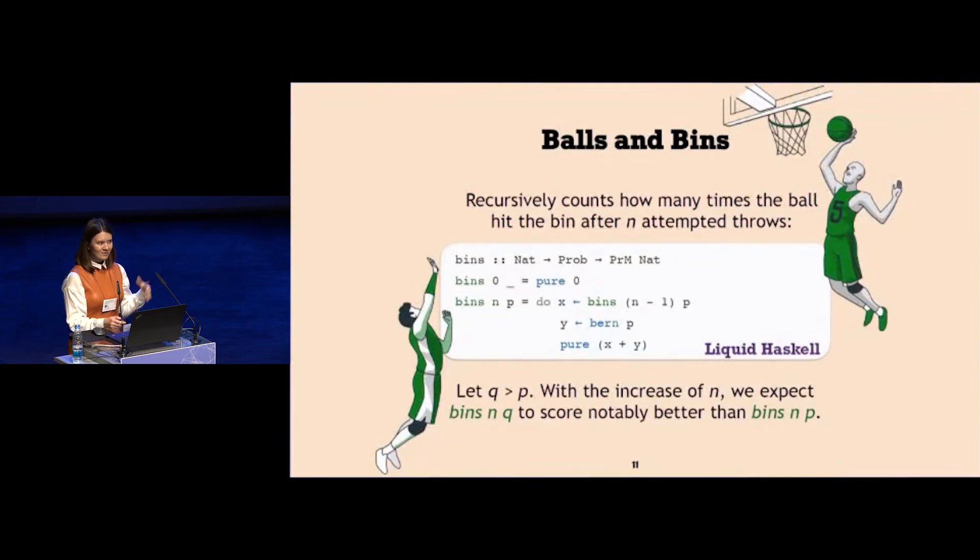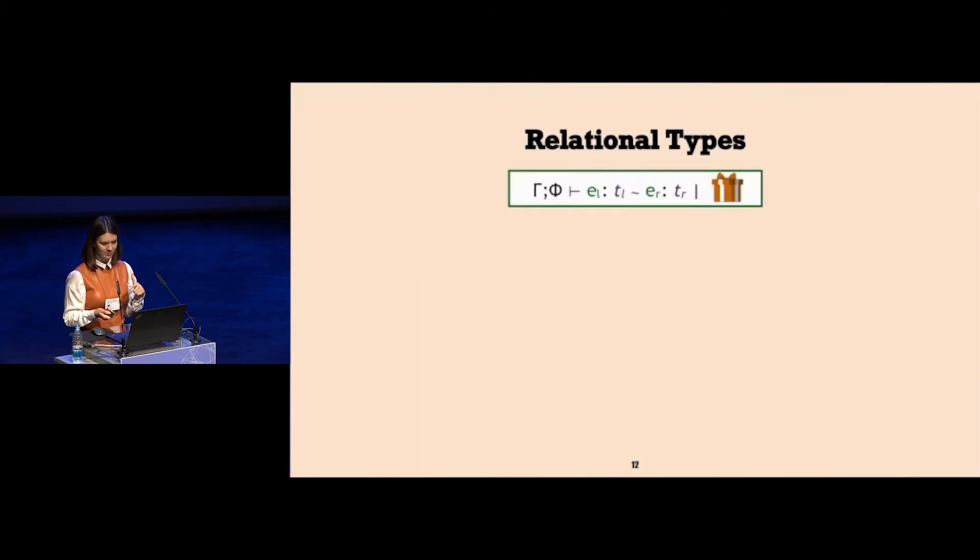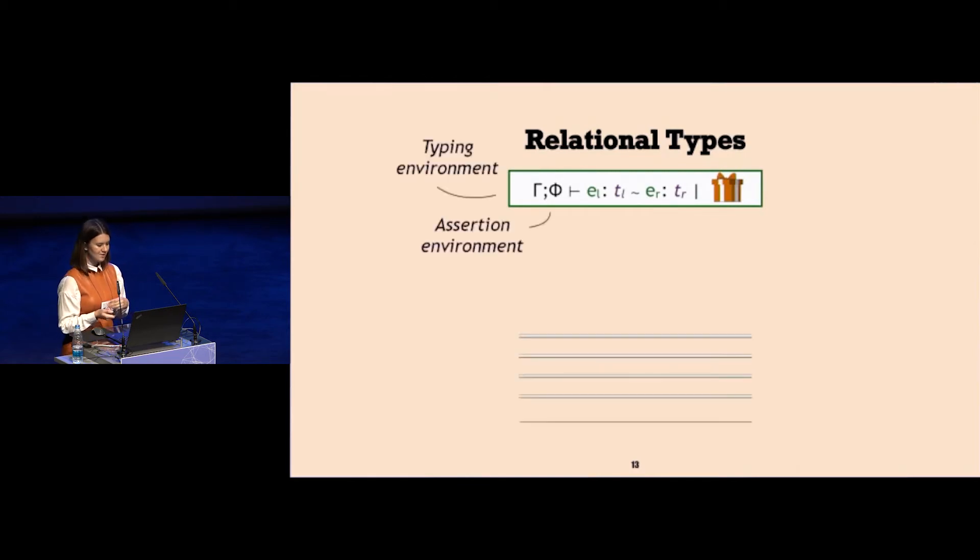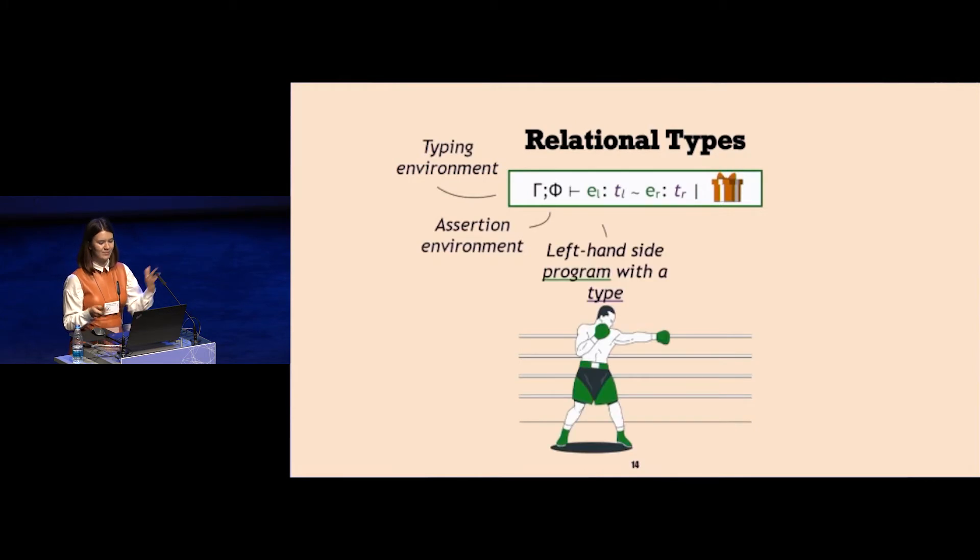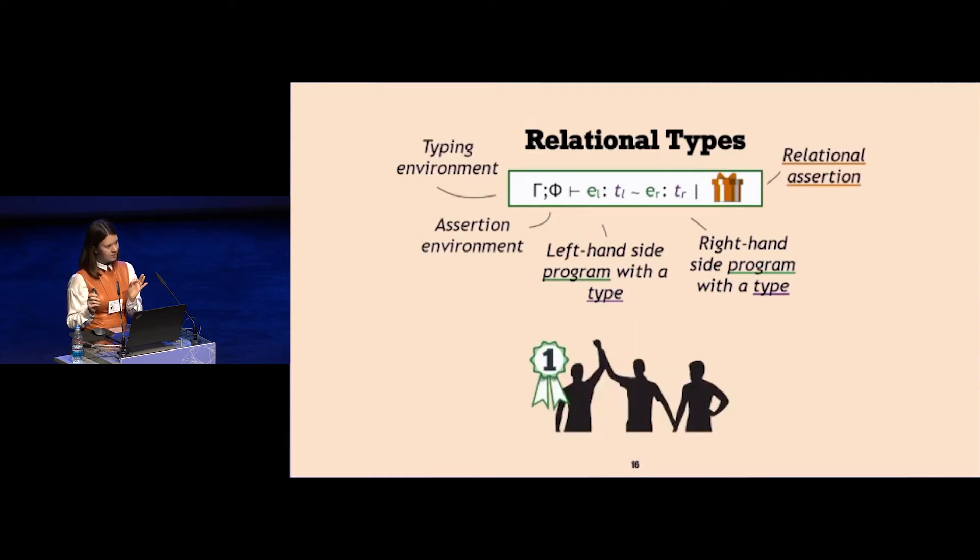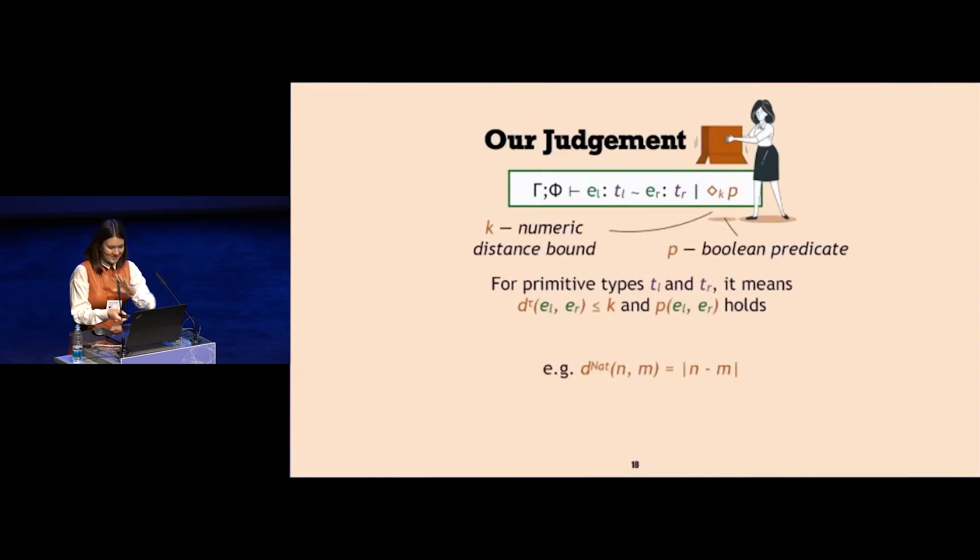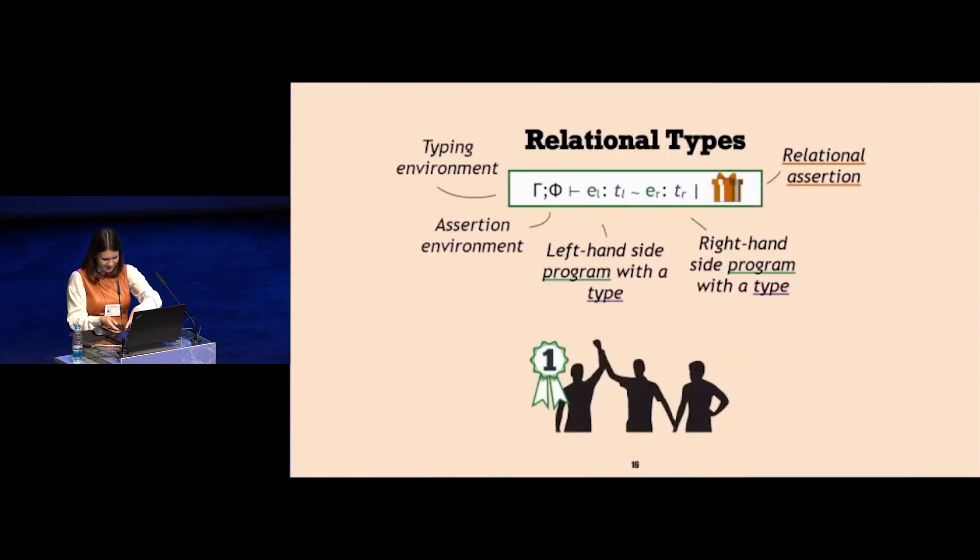There is a very elegant way to verify such relational properties about programs, which is called relational types. What the typing judgment of relational type means is that in some sort of typing environment, we can compare left hand side program with its type to right hand side program with its type with some relational assertion, which is very commonly a boolean assertion which says that one is in some sense better than the other.